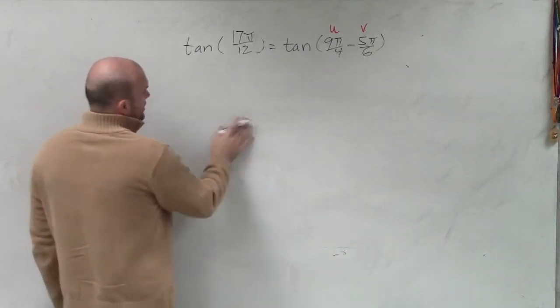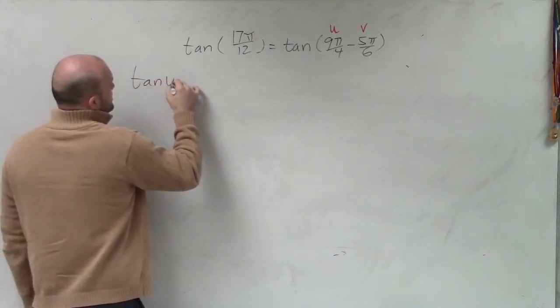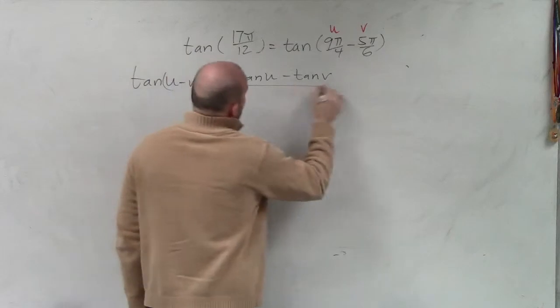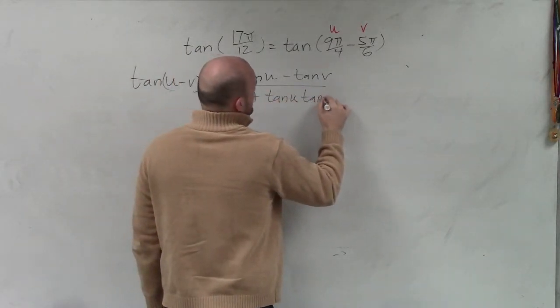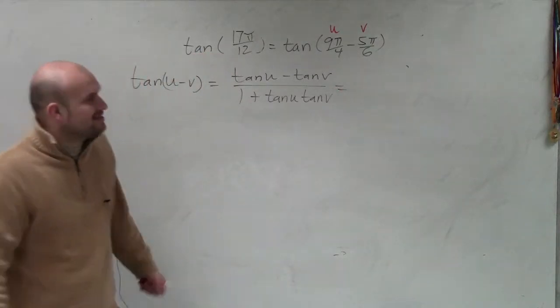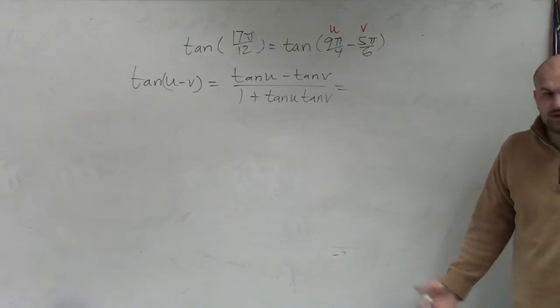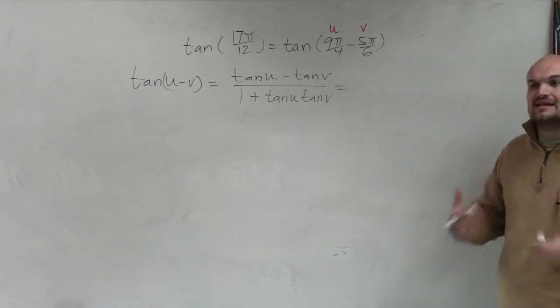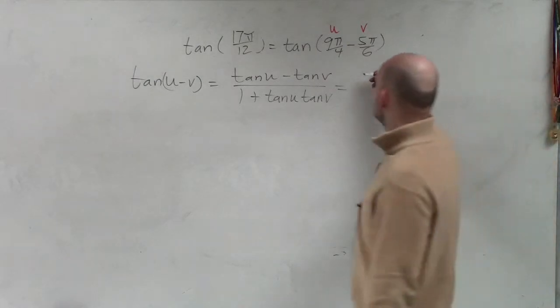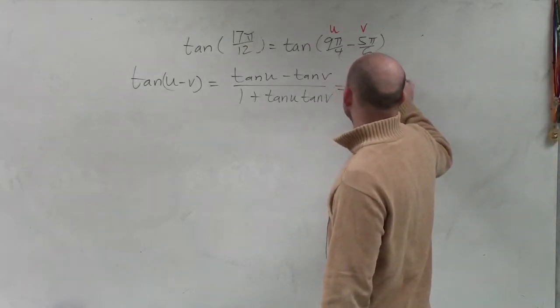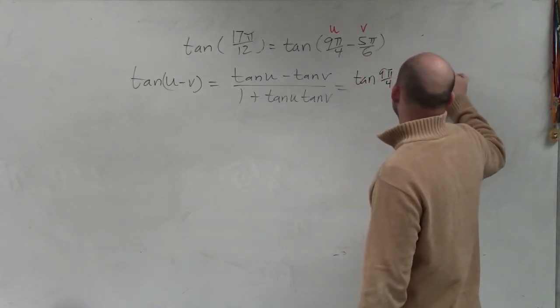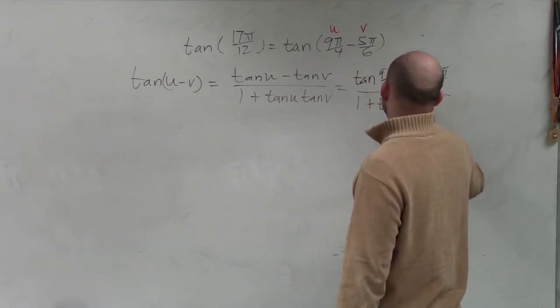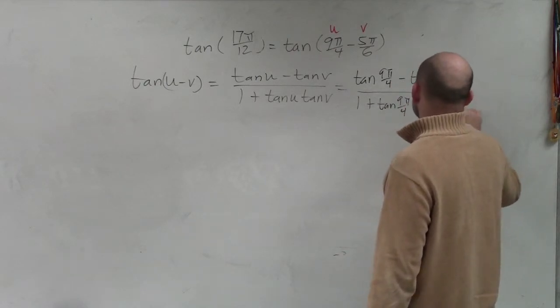So if we have the subtraction or the difference of two angles, we know we have to use this formula, the tangent of u minus v, which equals the tangent of u minus the tangent of v divided by 1 plus the tangent of u times tangent of v. Again, the next step that I like to do is plug our angles in. We're going to label 9π/4 as our u and 5π/6 as our v. Remember, it's positive 5π/6. We're just doing the difference of those two angles. So what I can do here is write this as tangent of 9π/4 minus the tangent of 5π/6 divided by 1 plus tangent of 9π/4 times tangent of 5π/6.